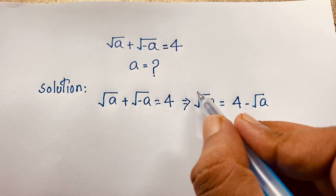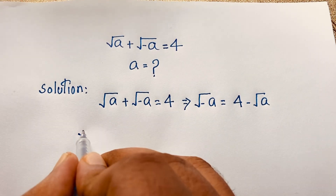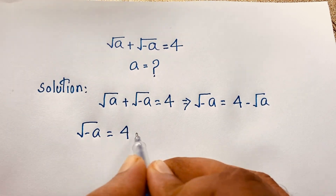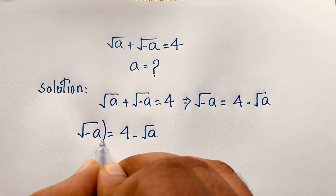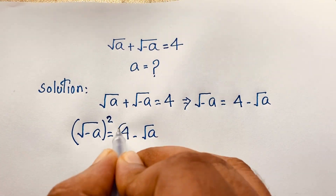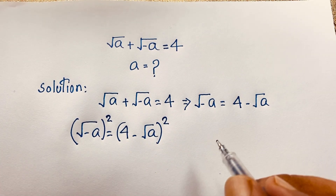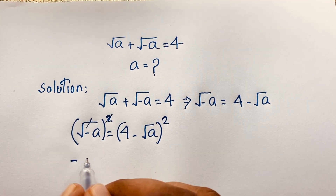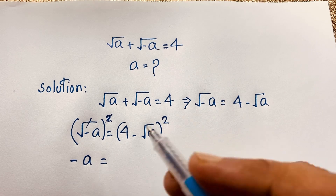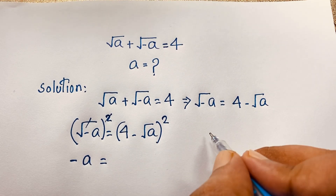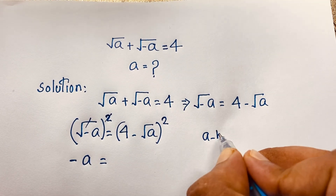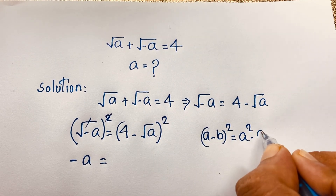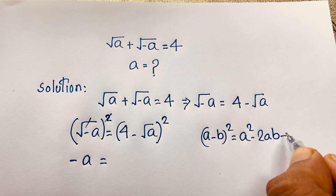I apply squaring to both sides. So this expression — square root minus A equals 4 minus square root A — I square both sides. The square root cancels out. We find negative A is equal to... then I apply the A minus B whole square identity. Note that (A minus B)² equals A² minus 2AB plus B².